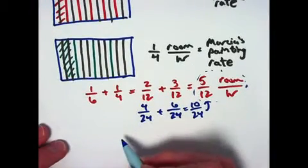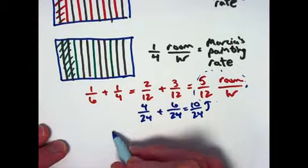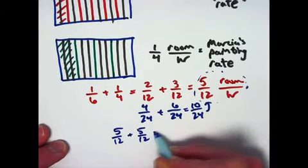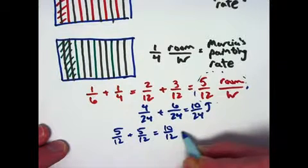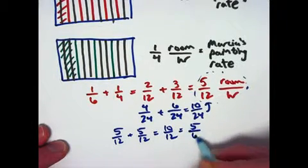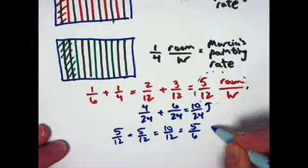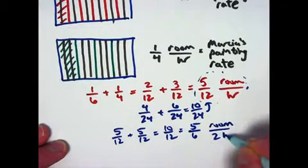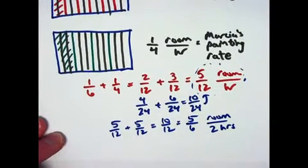You can think of it in terms of arithmetic as well as just 5 twelfths plus 5 twelfths, which is 10 twelfths or 5 sixths. That's a fraction of the room in 2 hours. I guess you could write that like this, room for 2 hours as your units.